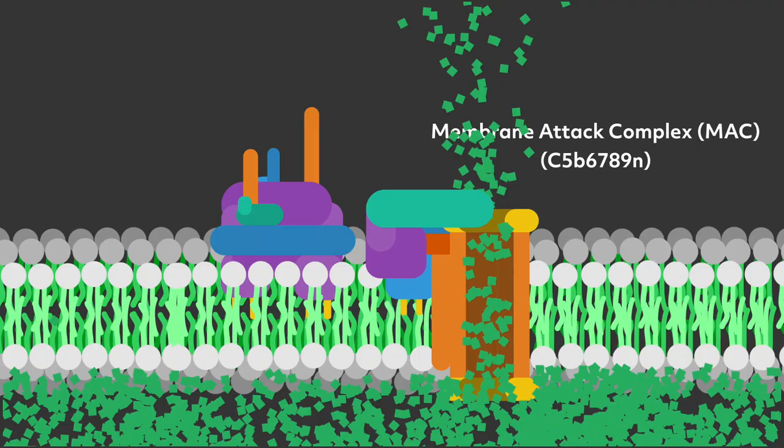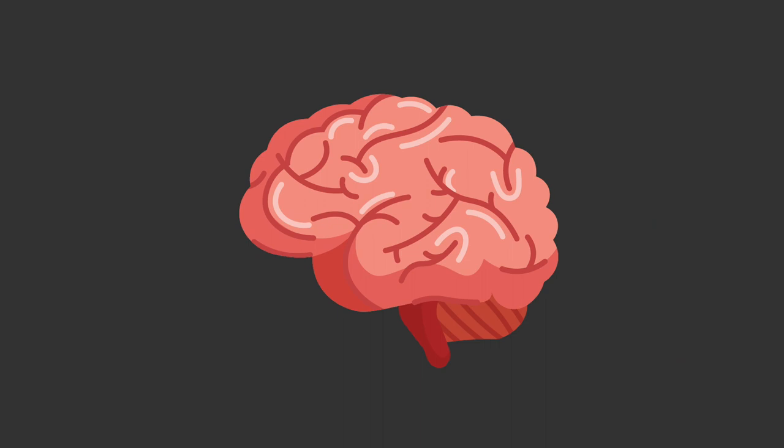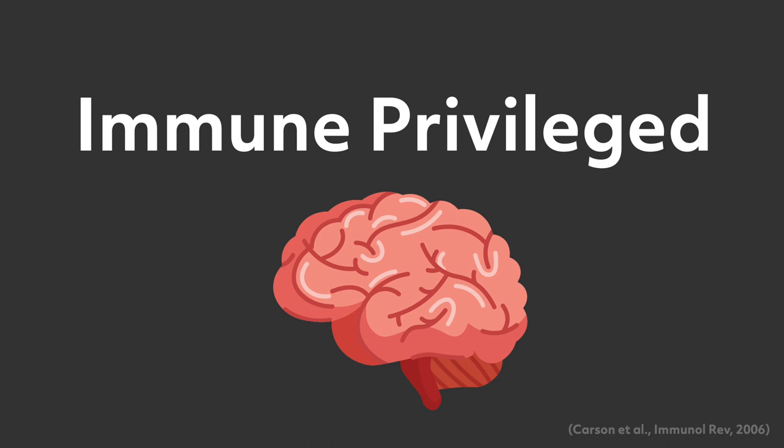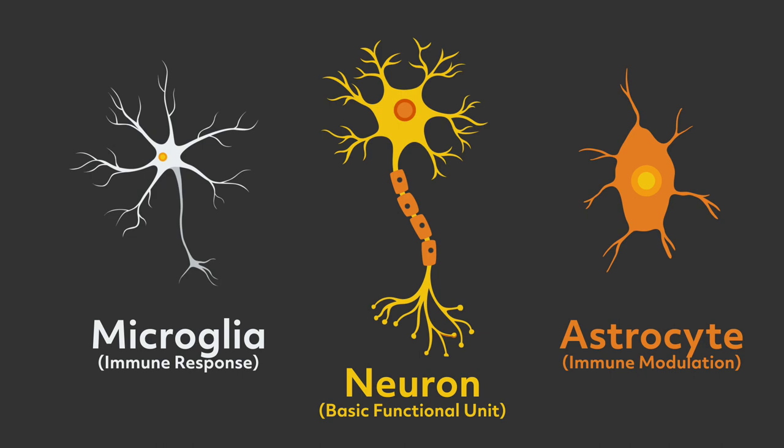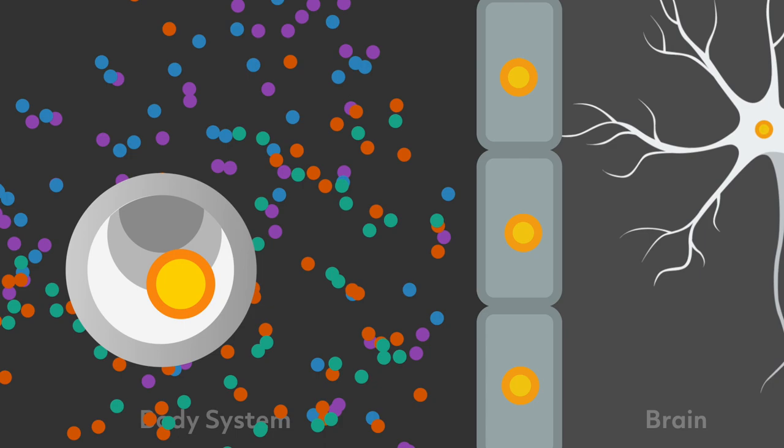While the complement can safeguard the body against pathogen invasions, there is one area that they cannot reach: the brain. The brain is an immune privileged organ, meaning that it has its own private security and does not need complement. In fact, the brain has special cells to keep complement proteins and other substances out of its circulation. These cells form what we know as the blood-brain barrier.